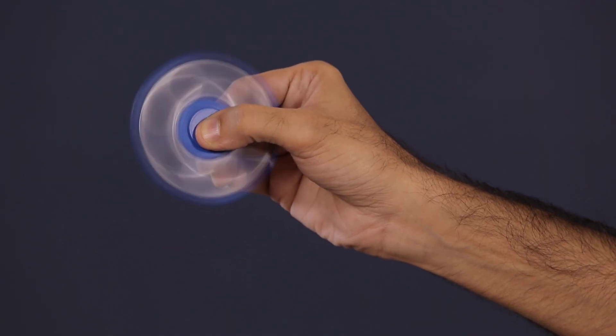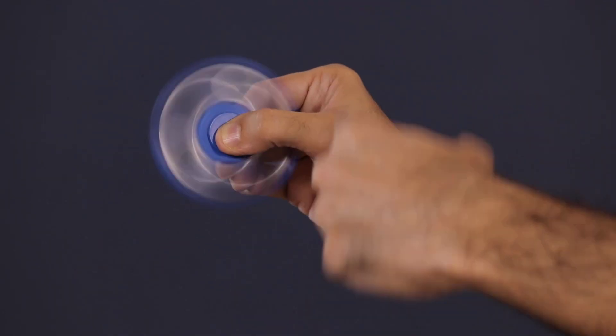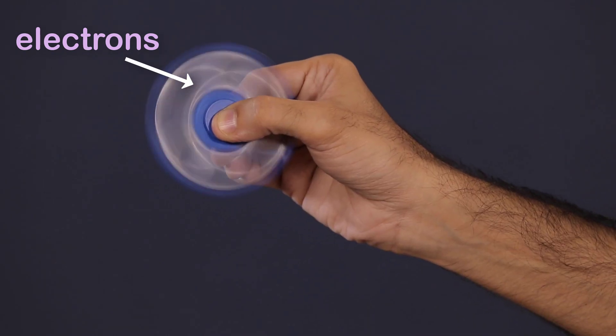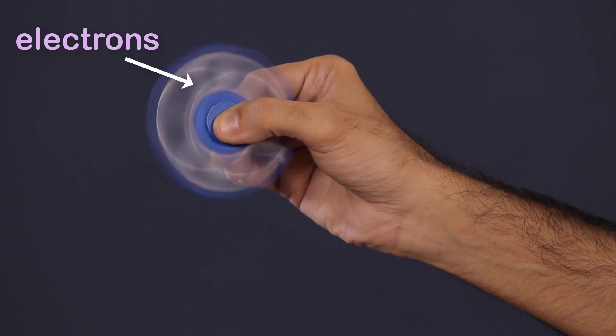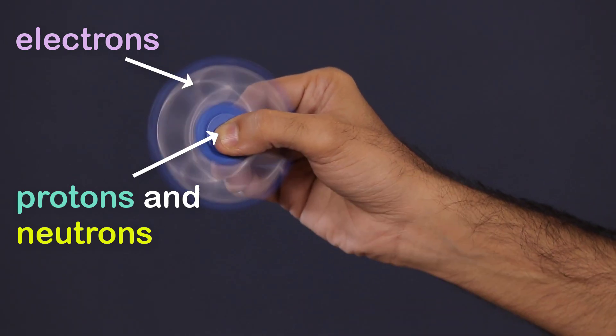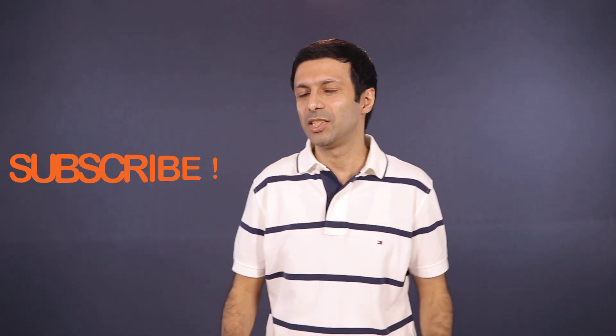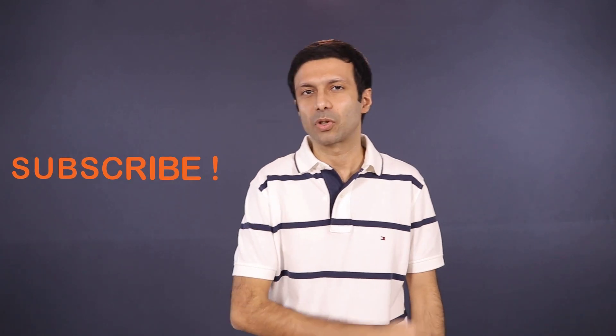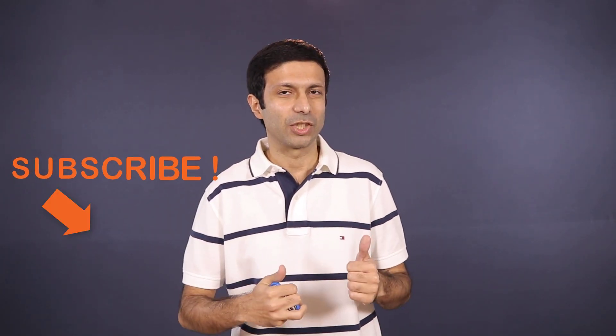So I hope the structure of the atom is crystal clear to you now. So next time when you are playing with your fidget spinner, do remember that the spinning part is the electrons. The heavier particles, that is the protons and neutrons, are located in the center called the nucleus. And do remember to like, comment and share this video and hit the subscribe button for my channel. Thanks for watching.